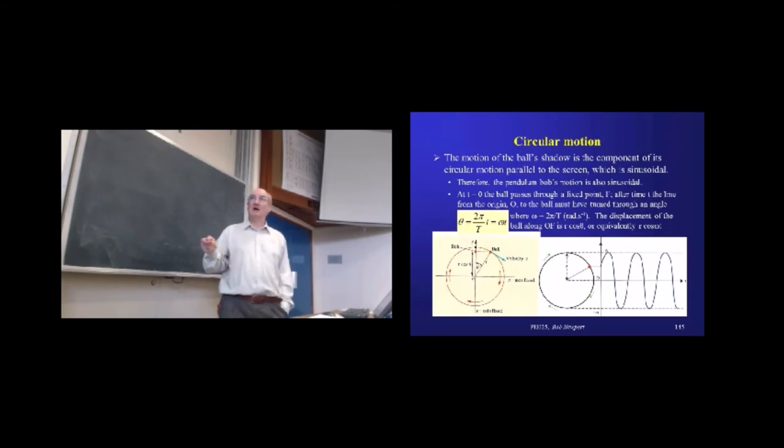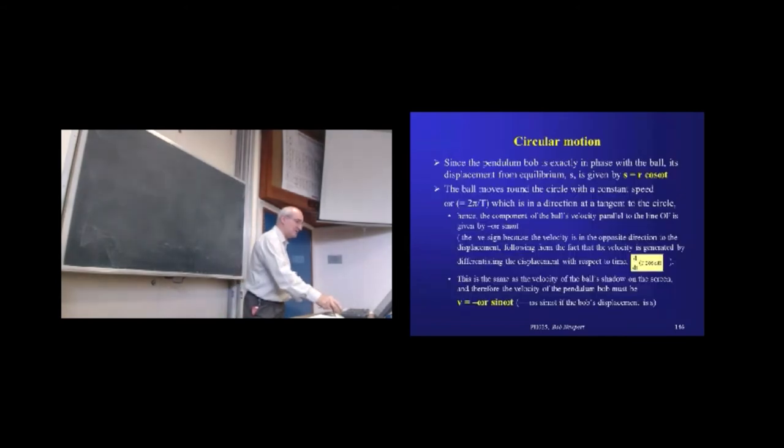So, where I've got r cosine θ here, I can equivalently write r cosine ω t. Because θ, remember, is changing at a constant rate with time. So, one is directly proportional to the other. So, we ought to be able to make these relationships. Up here, that, I hope, is fairly intuitive. So, here we've got our displacement of the pendulum bulb, r times cos ω t.